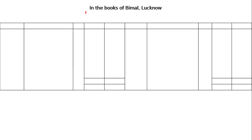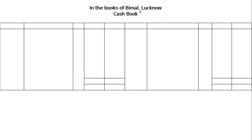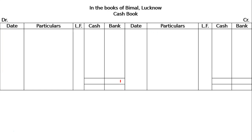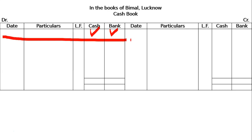In the books of BIMAL Lakhno, we will create a two-column cash book. The cash book has both a debit side and a credit side of the ledger — two ledgers: one is your cash ledger and the other is your bank ledger. This is your left-hand side and this is your right-hand side.